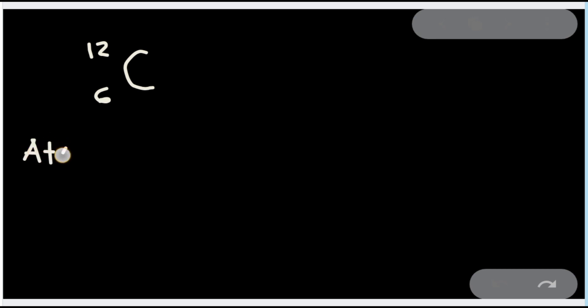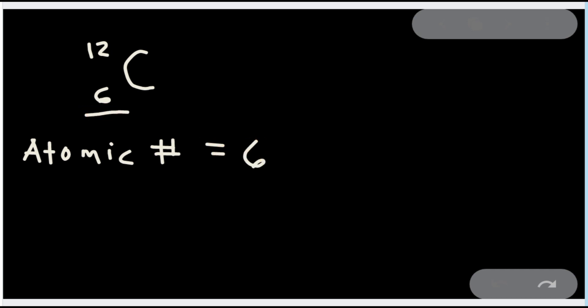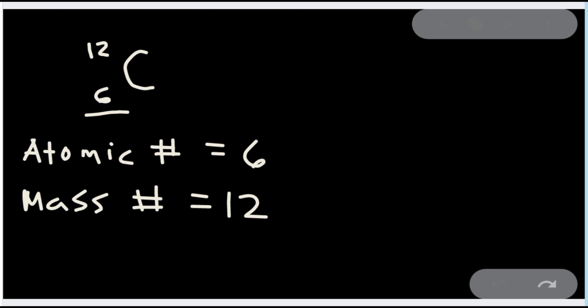Let's say we have carbon with 12 here and 6 here. Our atomic number is equal to 6, and our mass number is equal to 12.